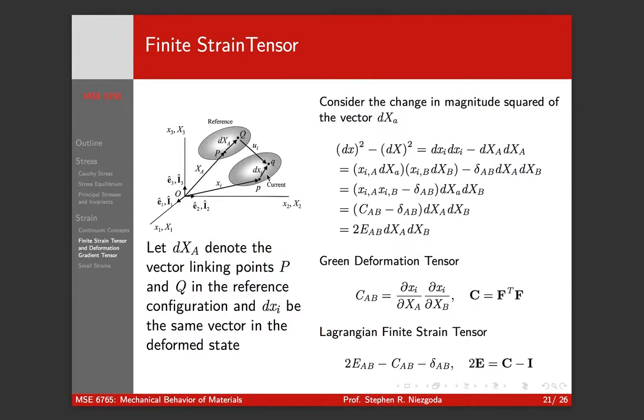For strain, what I care about is how much longer or shorter is dxi than dXA. So we'll take the change in the magnitude squared, the length squared of these two vectors. This is basically just the algebra of how we derive the strain. I really don't think this is super important, but from an understanding point of view, I want you to understand that the strain captures the change in length, the relative change in length of those vectors.